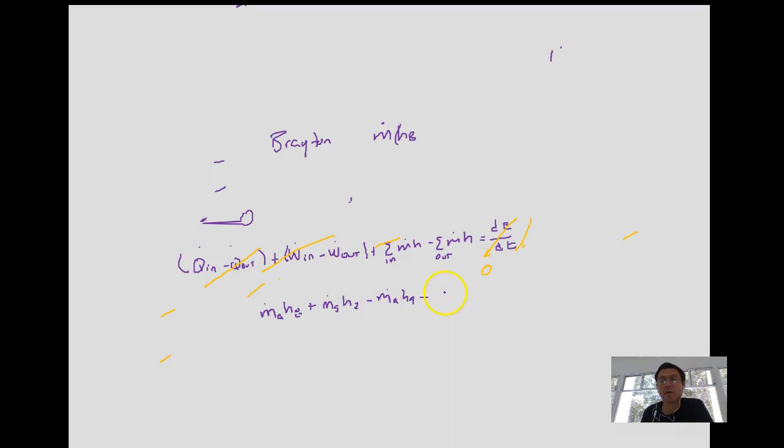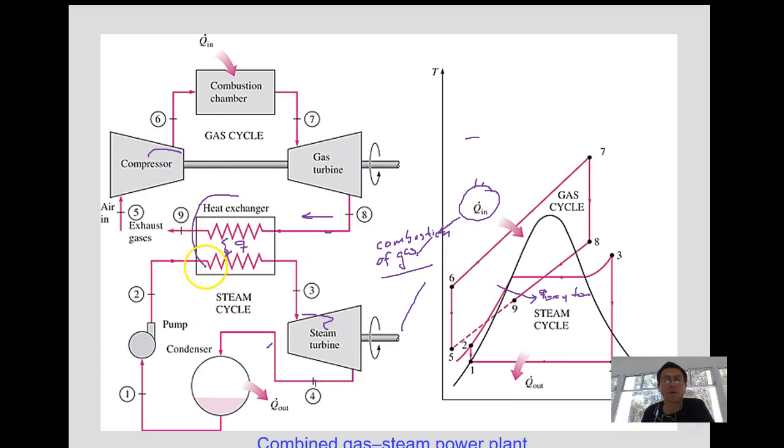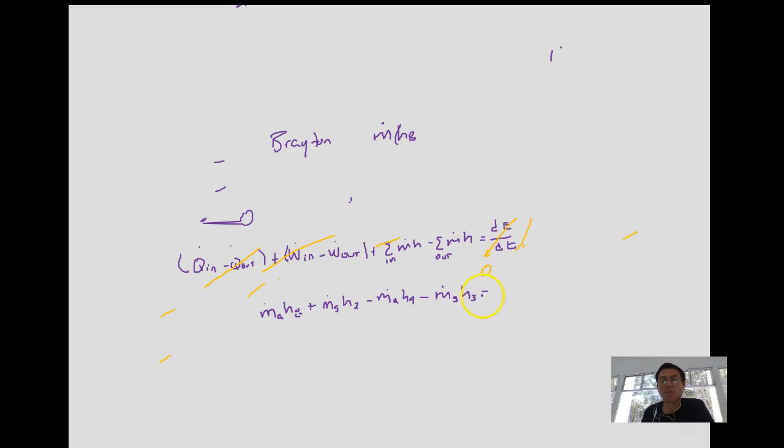Minus mass flow rate of steam h_3. We are analyzing this heat exchanger. This should be equal to zero. So if we combine similar terms, we will get mass flow rate of air times (h_8 minus h_9) equals mass flow rate of steam times (h_3 minus h_2).